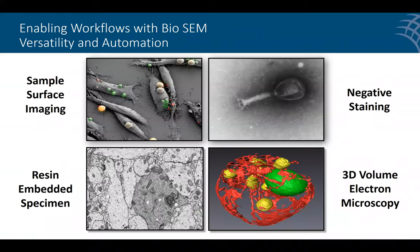One of the things to think about for scanning electron microscopy is that it is highly versatile. I have some examples of the types of images you can acquire: you can do surface imaging, negative staining which is a common technique for transmission EM, work with resin embedded samples, and make high-resolution volume electron microscopy data sets. There's just high versatility in what you can perform.